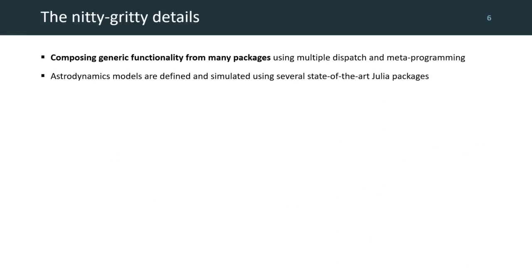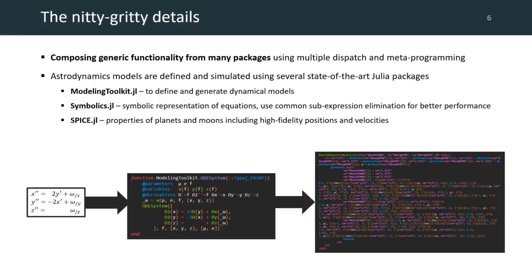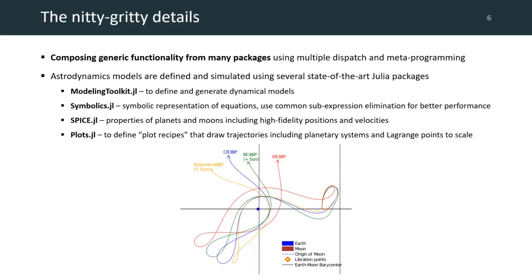So, what Julia gives us is the ability to compose generic functionality from many packages using multiple dispatch and metaprogramming. Our models are defined and simulated using several state-of-the-art packages, including again, modeling toolkit.jl, also symbolics.jl, which lets us manipulate the equations and use upcoming features like common sub-expression elimination to provide better performance, spice.jl to access high-fidelity positions and velocities of planets and moons, plots.jl to define plot recipes that draw trajectories, including planets, moons, and Lagrangian libration points to scale.